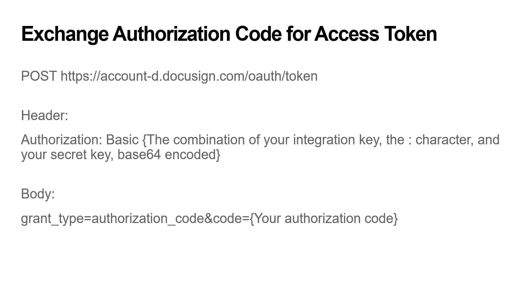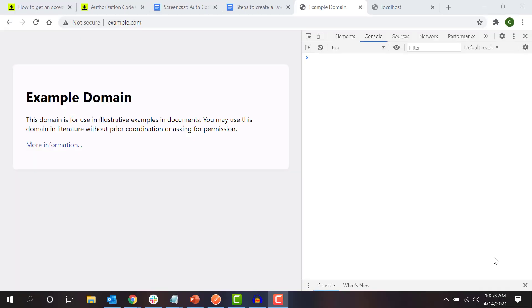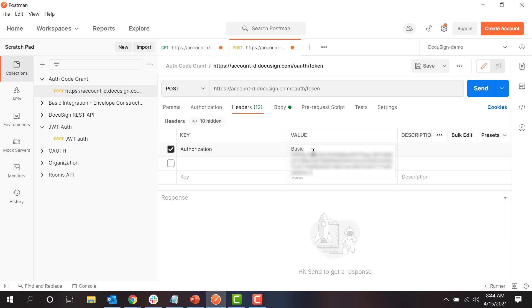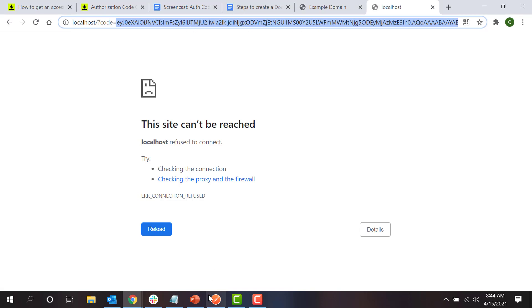Now that I have consent and the authorization code, I can exchange that code for an access token by sending a POST request to the DocuSign Authentication Service API. For this example, I'll use Postman to make the request using the development environment URI. This request has one header and two body data fields. The header data field is authorization, which contains your app's integration key and a secret key separated by a colon character, converted into base64, and prefixed with the word basic. I will use the btoa function in the Chrome browser's JavaScript console to convert the combination of my integration key, colon, and secret key into base64, then copy the resulting value into my Postman authorization header. The body fields are grant type, which should have the value authorization_code, and code, which contains the authorization code that I just saved.